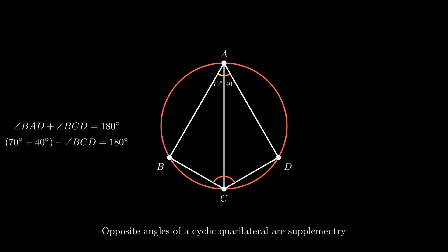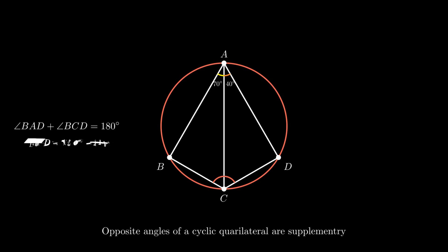As angle BAD is the sum of 70 degrees and 40 degrees, which equals 110 degrees, therefore angle BCD equals 180 degrees minus 110 degrees, which is equal to 70 degrees. Hence the value of angle BCD equals 70 degrees.